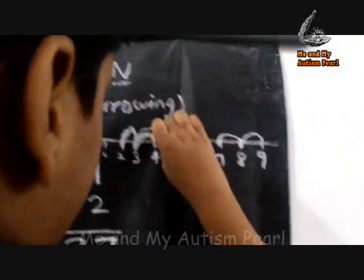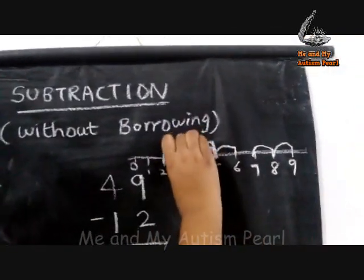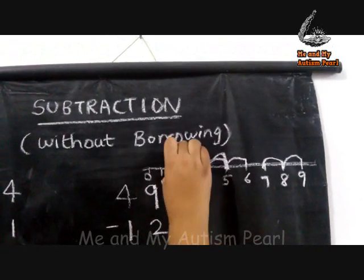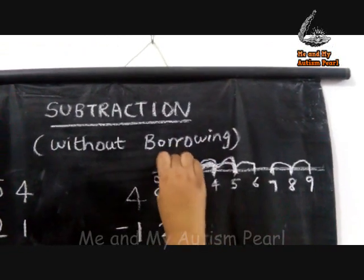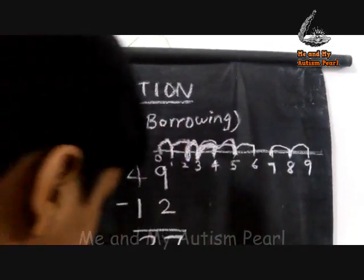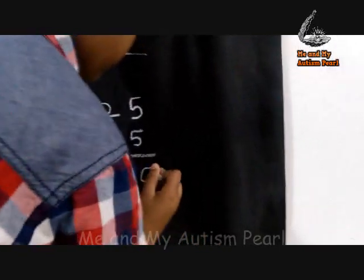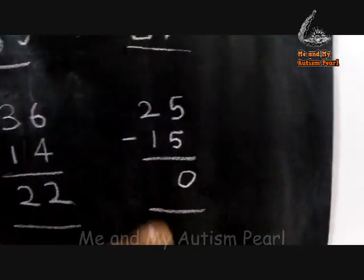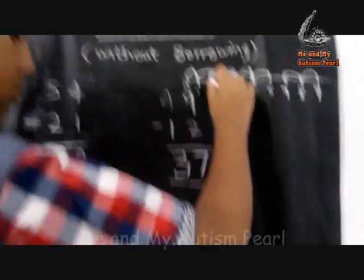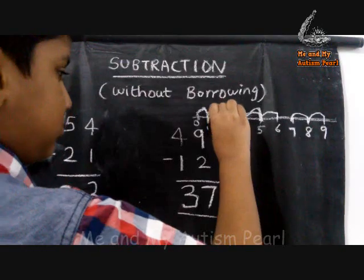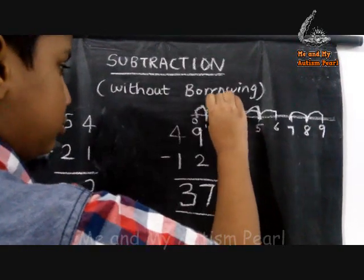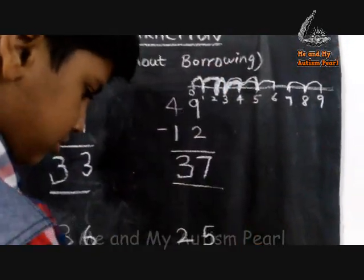Next: twenty-five minus fifteen. Show me: five, four, three, two, one, zero. Two, two minus one, two, one. The answer is ten.